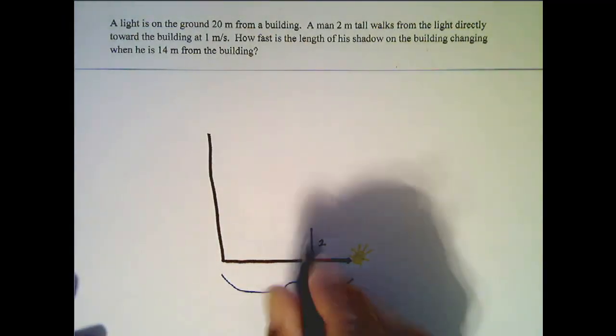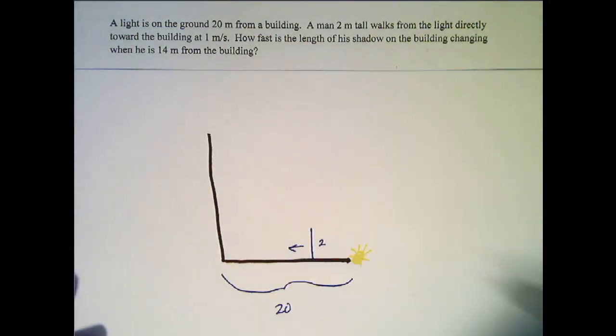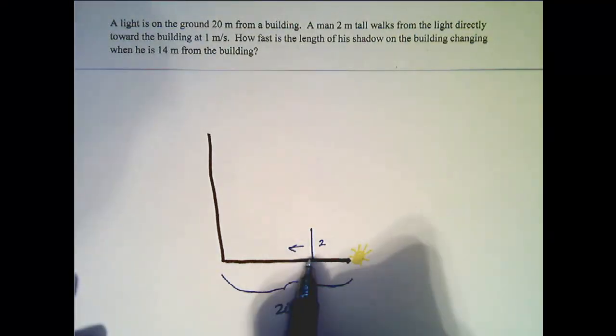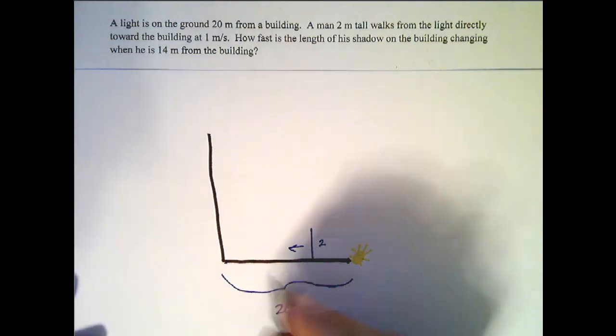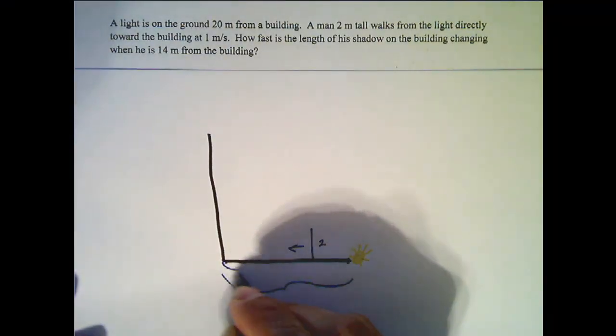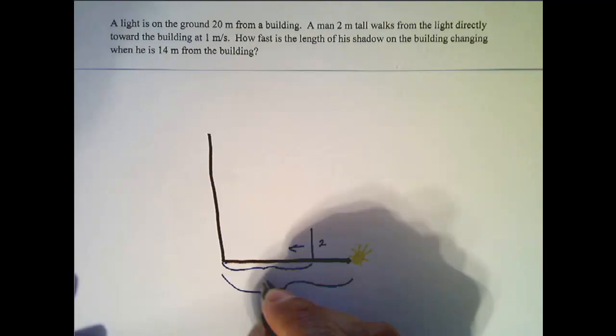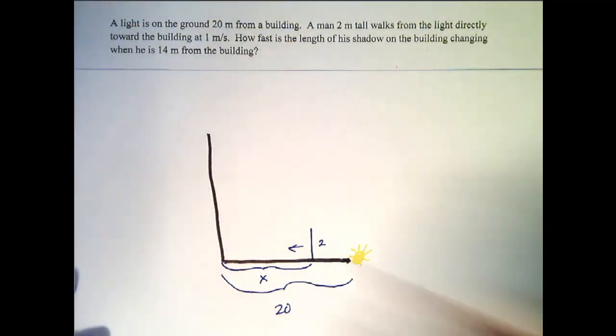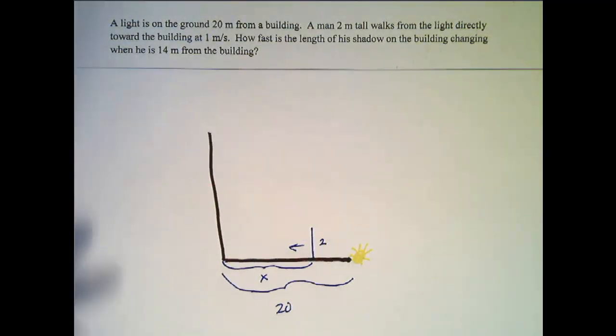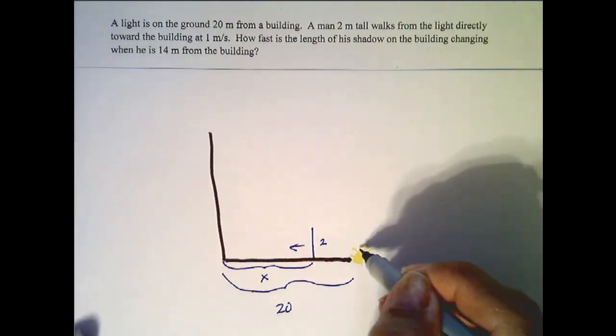The man is walking towards the building, which means this distance right here from the man to the building is changing. So let's give that variable a name, that quantity that's changing. Now the shadow is cast from the sun,